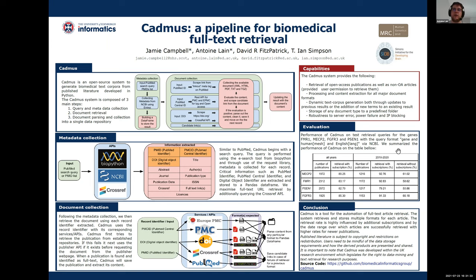How to evaluate Cadmus? In order to evaluate the performance of Cadmus, we used four genes: FMR1, MECP2, FGFR3, and PSEN1, with the query gene name and human MeSH and English language. We then compared results using all years versus 2010–2020, and subscription versus open access. For the whole year range, the retrieval rate is around 85%. For the last ten years, between 2010 and 2020, the retrieval rate is around 89%.